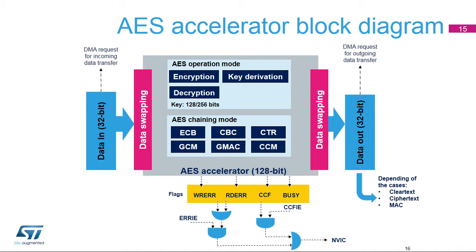The error flags block checks the behaviour of the AES Accelerator via two different flags. The read error flag, called RDERR, is set in the AES status register when an unexpected read operation is detected during the computation phase or during the input phase. The write error flag, called WRERR, is set in the AES status register when an unexpected write operation is detected during the output phase or during the computation phase. An interrupt can be generated when one of these two error flags is set, if the error interrupt enable bit, called ERRIE in the AES control register, was previously set.